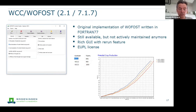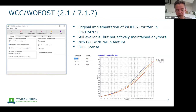The original implementation is coded in Fortran 77. It's still available and downloadable, but not actively maintained anymore. It has a rich graphical user interface with a 'rerun' feature that allows you to play with parameters — for example, the TSUM1 parameter that determines how much temperature sum is needed to go from emergence to flowering. You can run multiple values such as 800, 900, or 1000 degree-days, and on the right you see the different resulting runs — the red run takes longer because the temperature sum is higher.